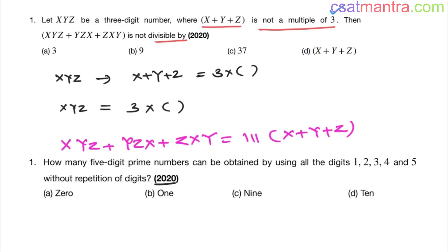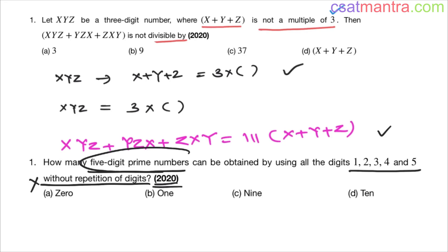Another question asked in 2020 using the same concept: how many 5-digit prime numbers can be obtained using all the digits 1, 2, 3, 4, 5 without repetition? Please use the same concept, solve this question, and post your answers in the comment section. We will solve this question in tomorrow's DDSQ. Thank you.